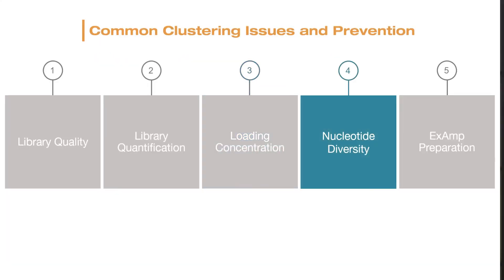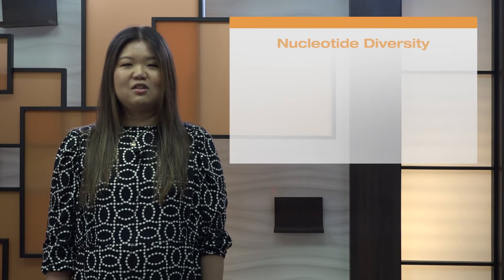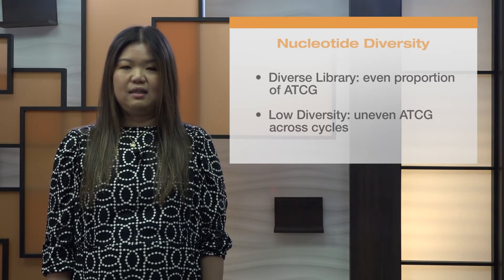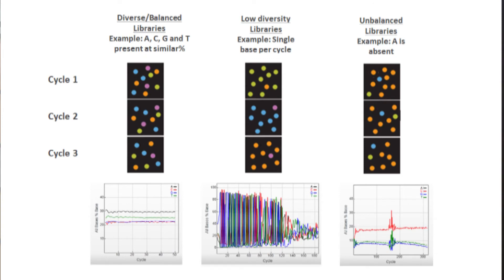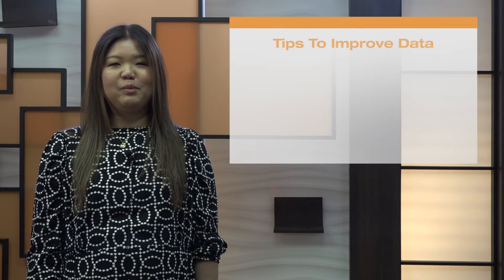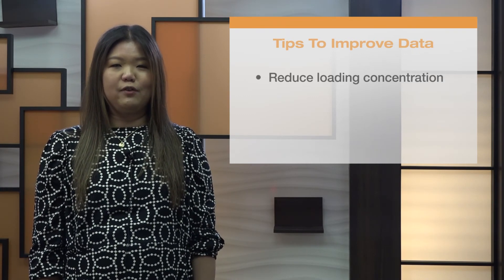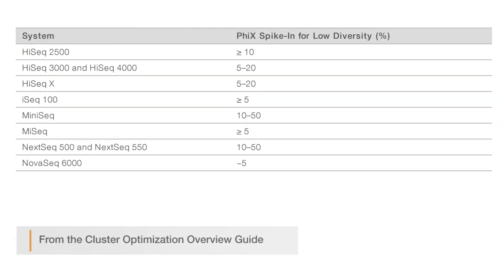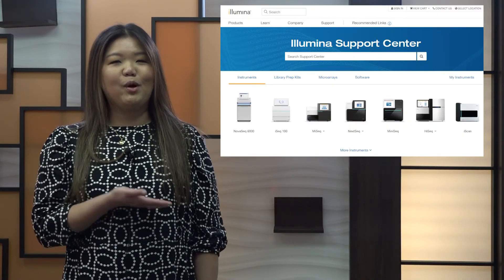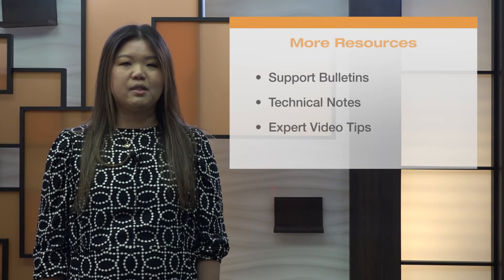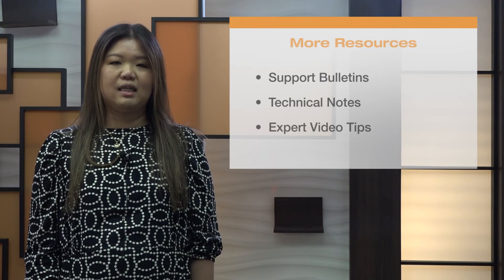Let's also consider how nucleotide diversity can impact clustering. Illumina bases cluster density recommendations on diverse libraries—those that have relatively even proportions of each nucleotide A, T, C, and G. Low diversity libraries, or libraries that have an uneven proportion of nucleotides across the flow cell from one cycle to the next, can compromise software performance and data accuracy. When sequencing low diversity libraries, Illumina recommends two strategies: reduce the loading concentration relative to the level recommended for diverse libraries to provide a more balanced signal, as shown in this table. The Illumina support website hosts additional support bulletins, technical notes, and video tips to help optimize clustering and sequencing with low diversity libraries.